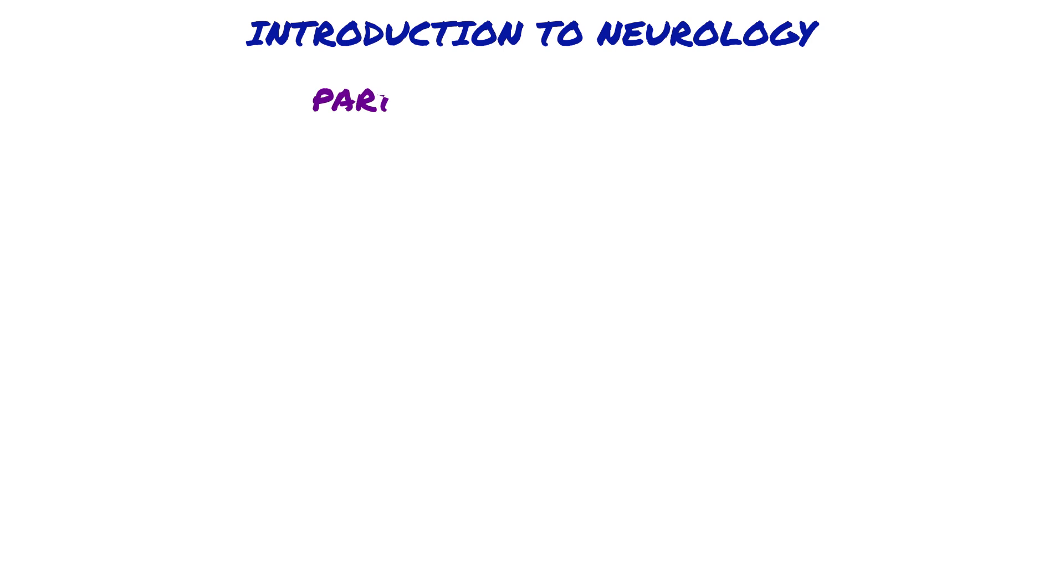Let's look at the parts of the neurons. There are three parts of neurons. The first part is dendrites, which are branching, thin projections from the cell body of neurons that receive input from neighboring neurons and transmit it to the cell body.